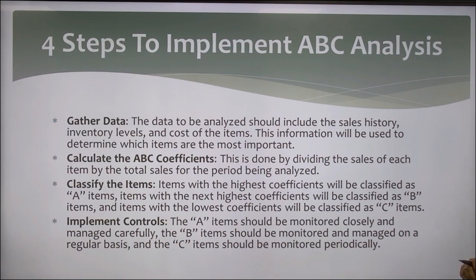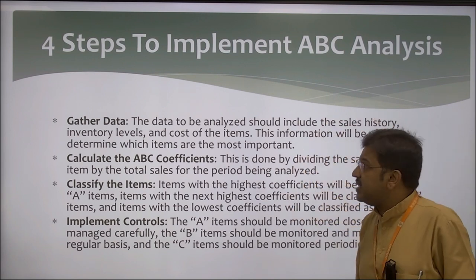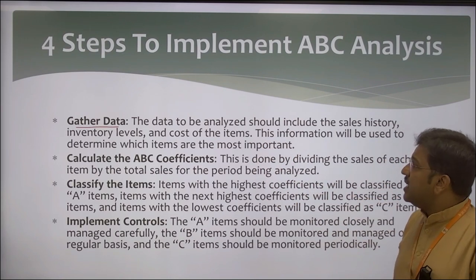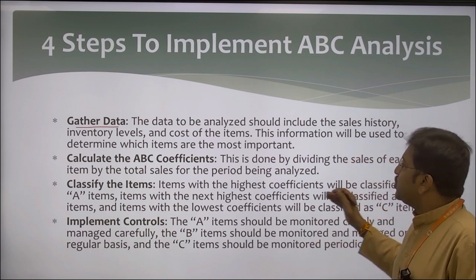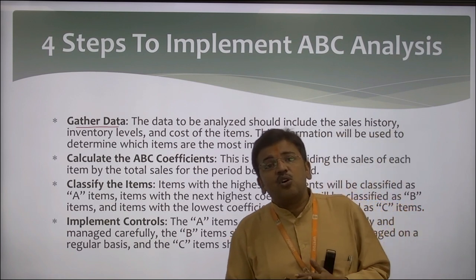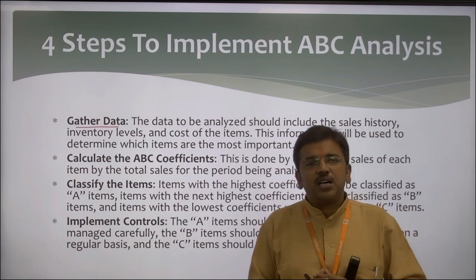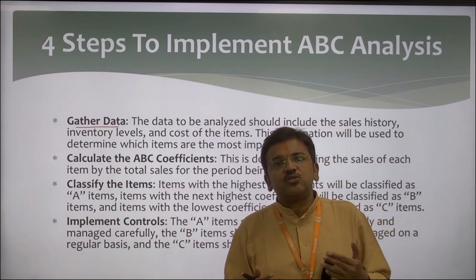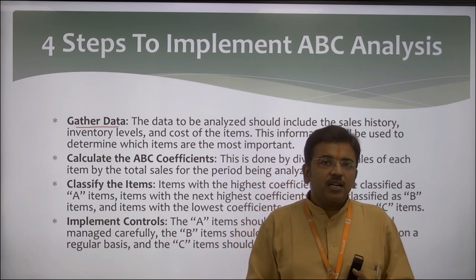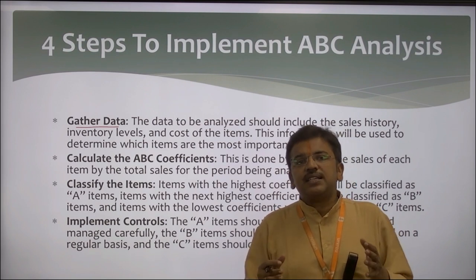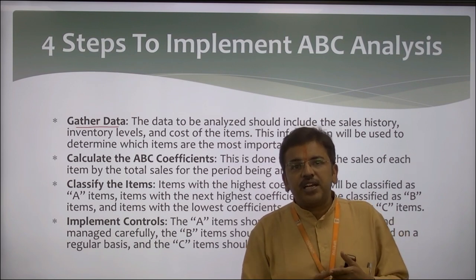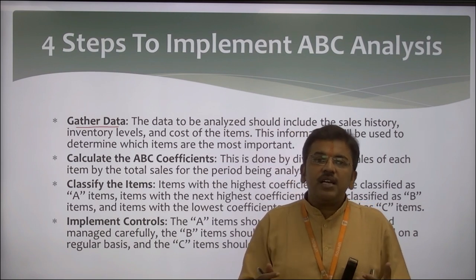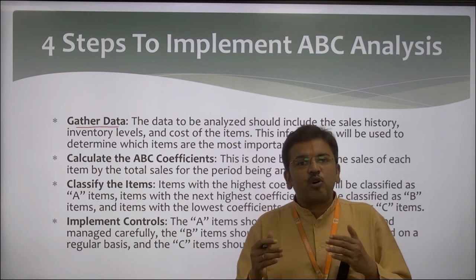There are four steps to implementing ABC analysis. The first step is to gather data. The data to be analyzed should include sales inventory, inventory level, and the cost of the item — this information determines which items are most important. For example, in constructing a house, different materials are required: some have very high value, like cement, which must be stored properly as it is directly affected by rain or moisture; others like sand have the least value and can be bought in large quantity for less money. Gathering data about what raw material you are using, how you are using it, and how you are maintaining it is very important.